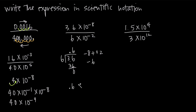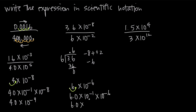That gives us negative 6. So we have 0.6 times 10 to the negative 6, but we're not quite in scientific notation yet. We move the decimal one place to the right to get 6.0, giving us 6.0 times 10 to the negative 1 times 10 to the negative 6. Adding the exponents: negative 1 plus negative 6 is negative 7, so our answer is 6.0 times 10 to the negative 7.